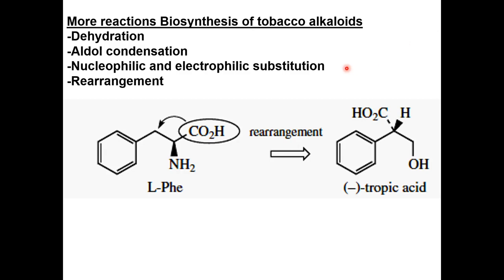Tropic acid is obtained from the initially formed compound by transamination to an aldehyde and reduction of the aldehyde into a primary alcohol. So tropic acid is involved in the formation of tropane alkaloids.